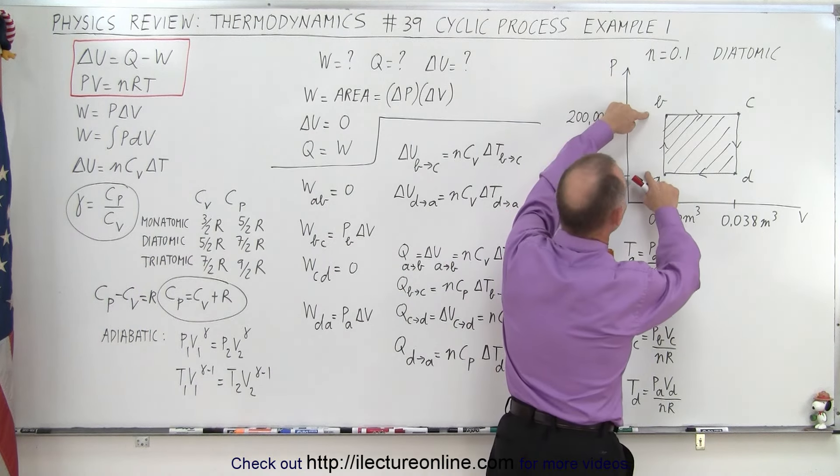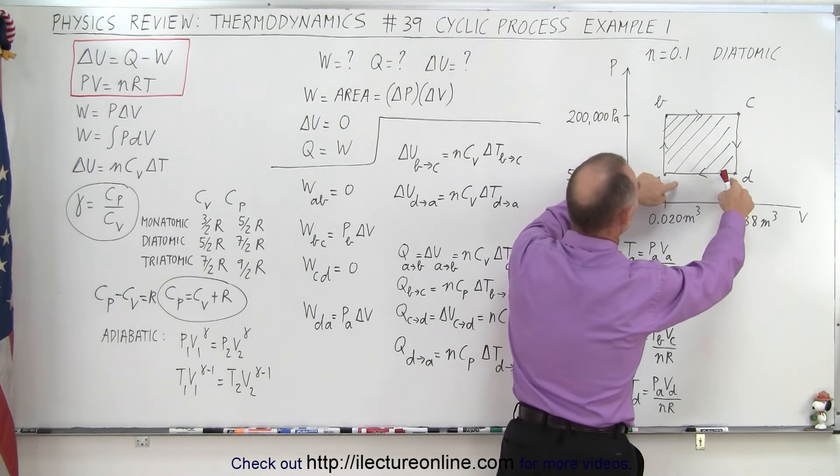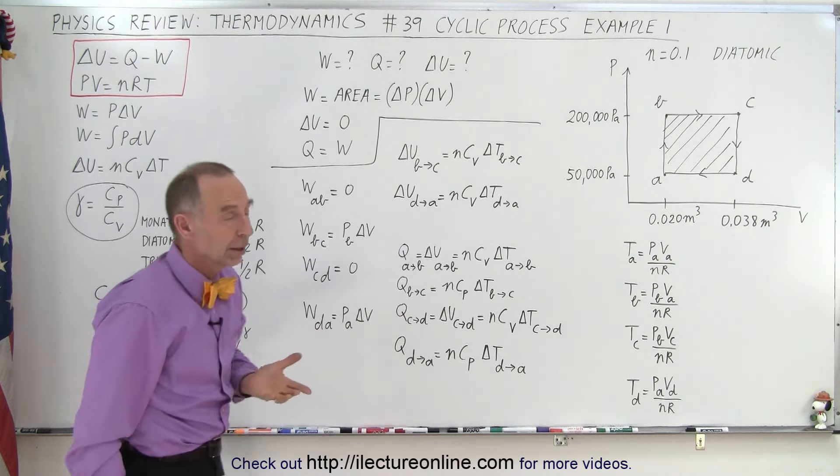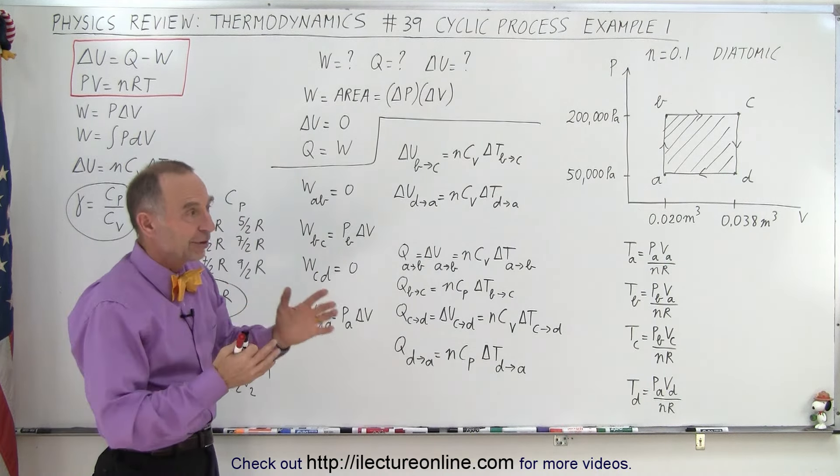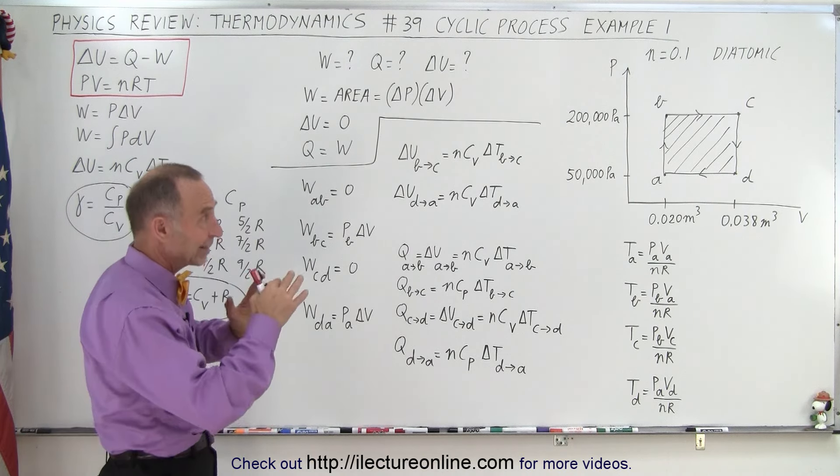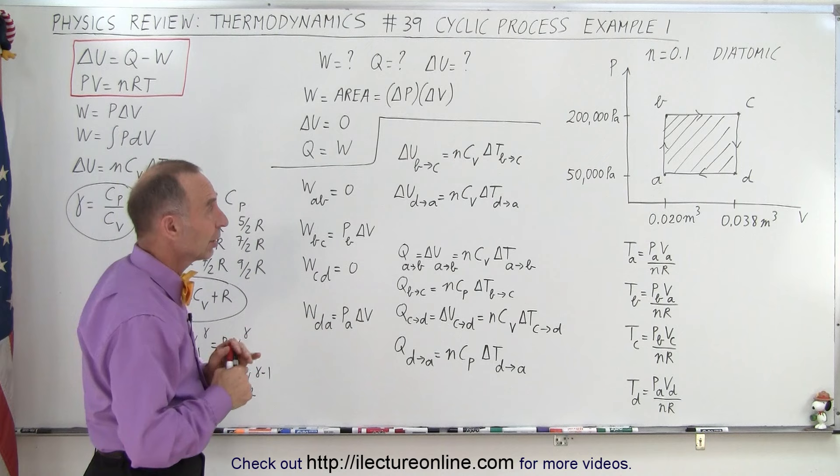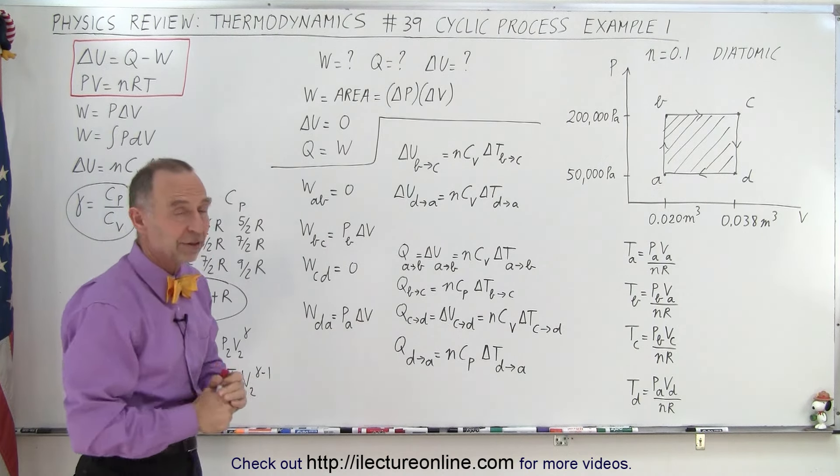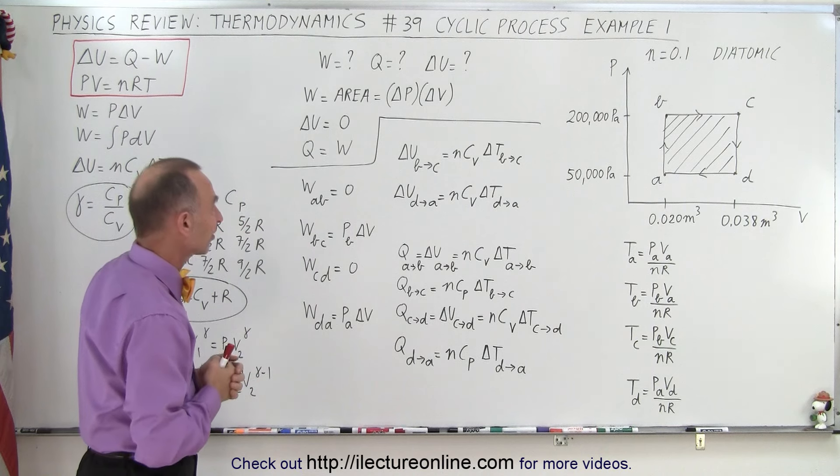So essentially, it's going to be the change in the pressure multiplied times the change in the volume, and that's what we have here, and that's always going to be the case. Now, if we have, like, isothermic and isobaric processes, it may be a little bit more difficult to find the area. But if it's simple like this, it's straightforward. We simply say it's the area inside the cycle.